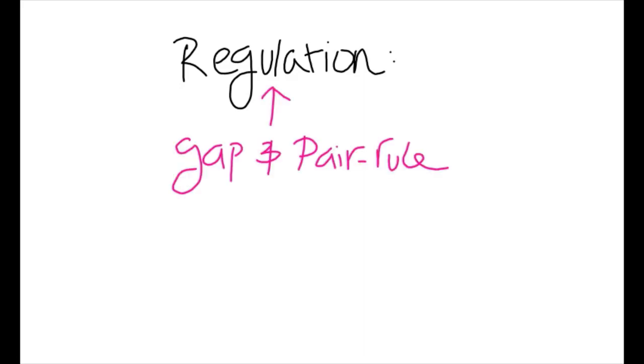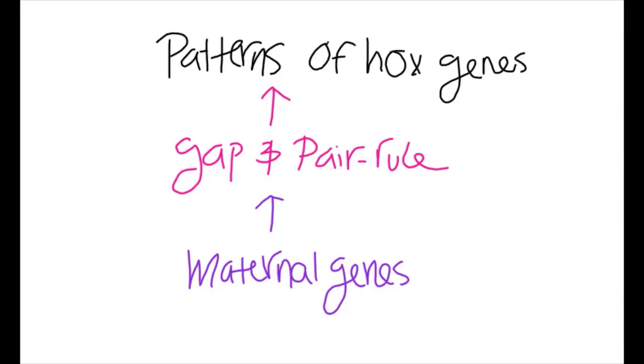In flies, these regulations come from the proteins of gap and pair rule genes, which are themselves regulated by the maternal genes, which all tell the Hox genes to turn on in specific patterns.